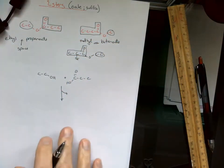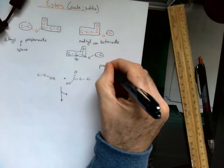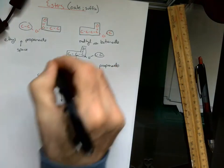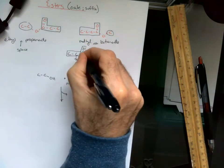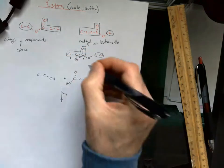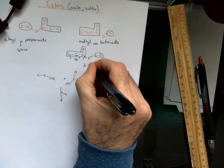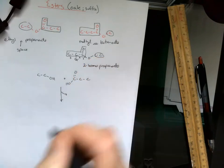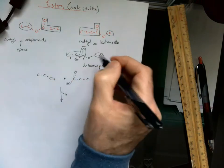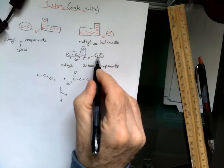that don't have the C double bonded O on it. This is a propanoate. Now, on the propanoate, if you number, the C double bonded to the O is one, two, three. There's a bromo on the second carbon, so it's 2-bromo propanoate. No space there, it all blurs together. And then there's an ethyl, so this group here